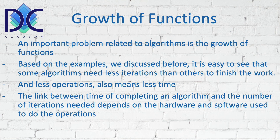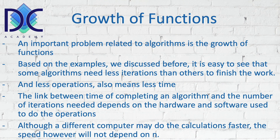Another element related to hardware is memory storage — in certain cases algorithms may need more memory because of the way they deal with data. The software itself is where we write the algorithms, and operations can be faster with better software or a better way to handle the algorithms. There are different programming languages, and some are better for certain types of calculations than others. The computer does the calculation faster, but the speed of the computer itself does not depend on the number of data points being considered.